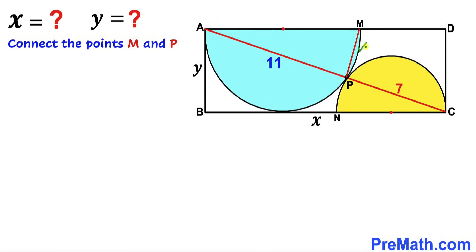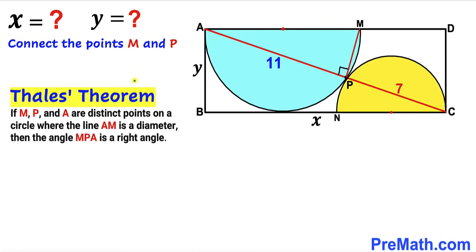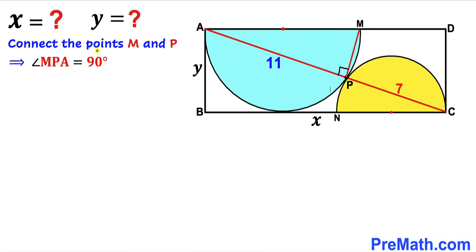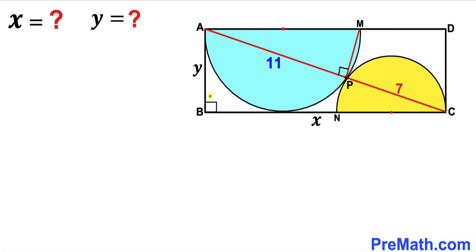We draw an auxiliary line MP by connecting points P and M. Now let's recall the Thales theorem. According to this theorem, if M, P, and A are distinct points on a circle and AM is the diameter, then the angle MPA is 90 degrees. Here, AM is the diameter, and since ABCD is a rectangle, angle ABC is also 90 degrees.